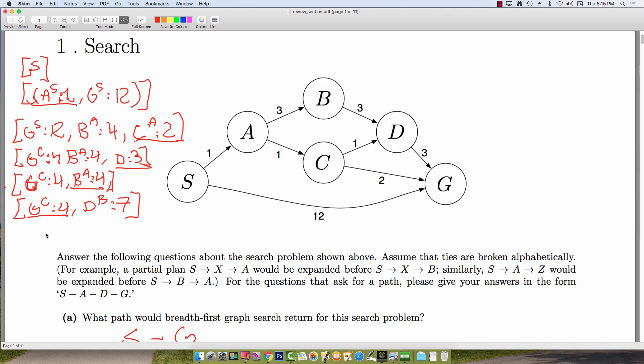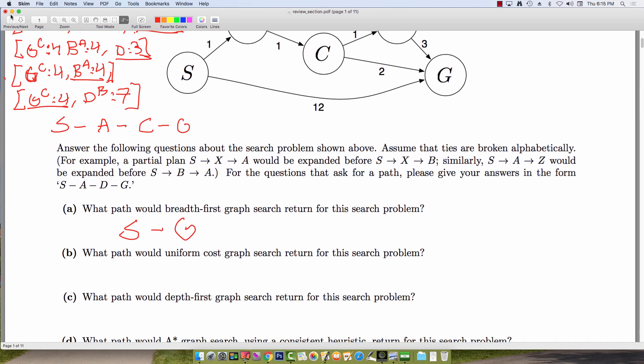To trace back, we have G, which came from C. When we pulled C off the fringe, that came from A. And we pulled A off the fringe that came from S. So we have a resulting path, S, A, C, G.